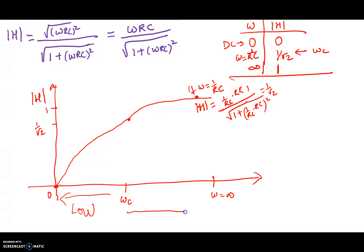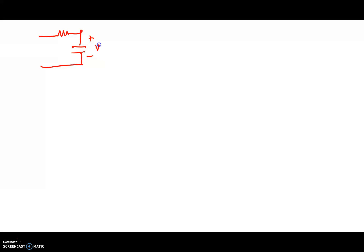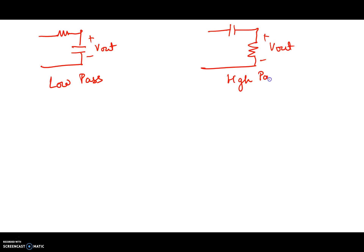However, after the cutoff frequency, the output voltage equals the input voltage because the magnitude of the transfer function becomes equal to 1. Thinking about which frequencies are seen at the output, we see that the higher frequencies appear at the output. So this is called a high-pass filter. In general, when we look at voltage across the capacitor it gives a low-pass filter, and when we look at the voltage across the resistor it gives a high-pass filter.